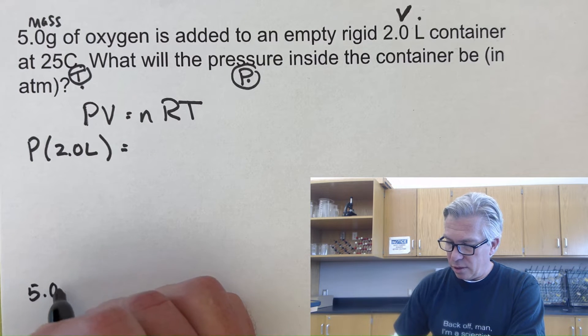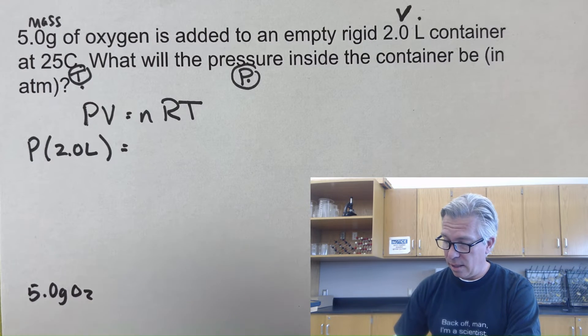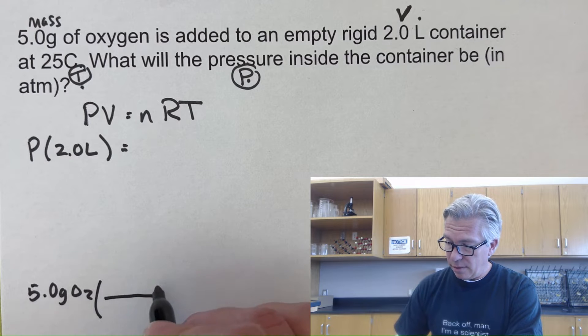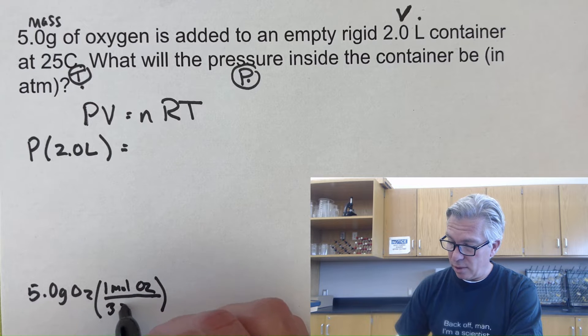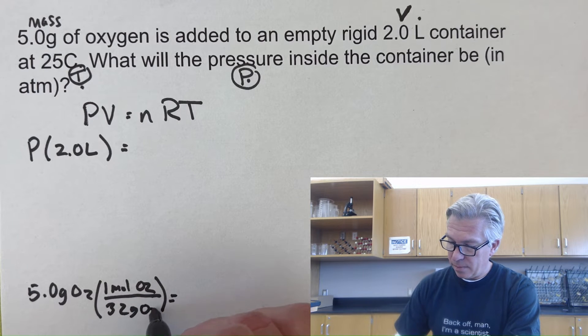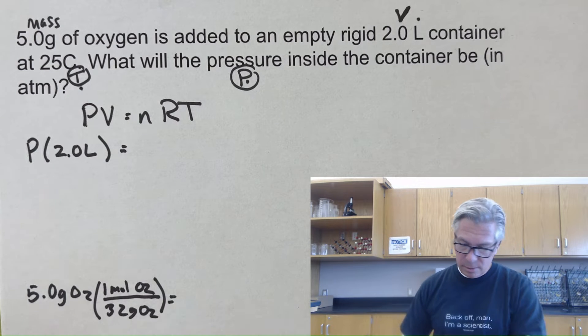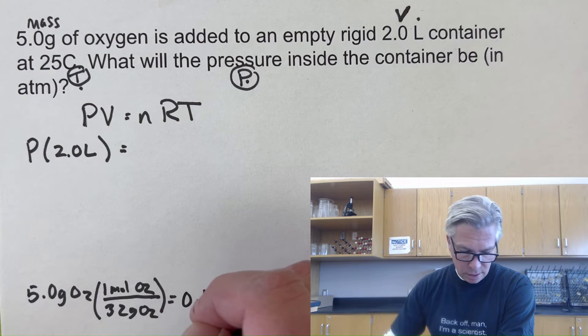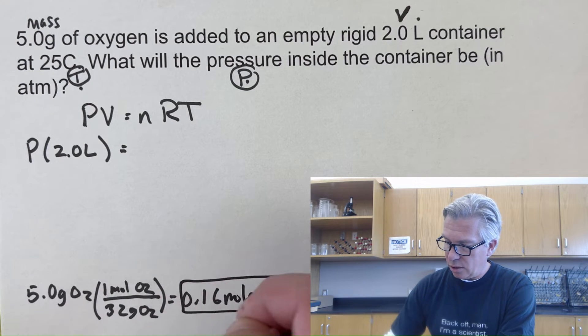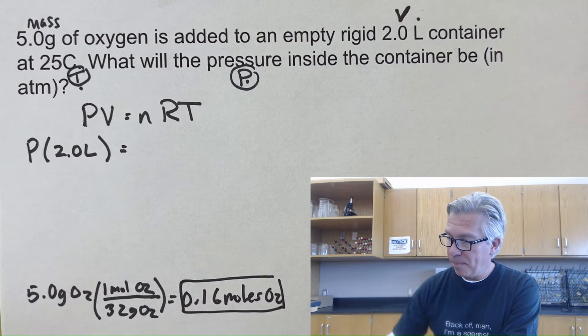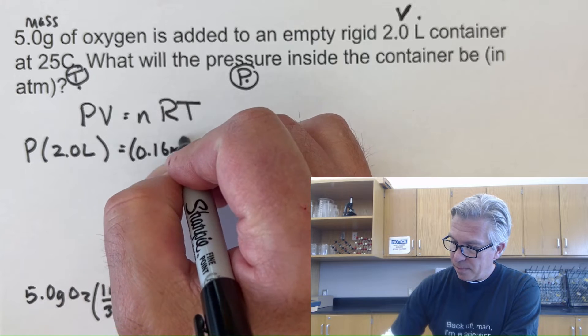I'll make a little mole conversion. 5 grams of oxygen. Remember that oxygen is O2, it's diatomic, it's one of those seven Brinkelhoff elements. One mole of O2 is 32 grams of O2. A quick tap of the calculator says 5 divided by 32 is 0.16 moles. I'm using two digits even though my calculator gave me more. I'm going to put that in for moles: 0.16 moles.